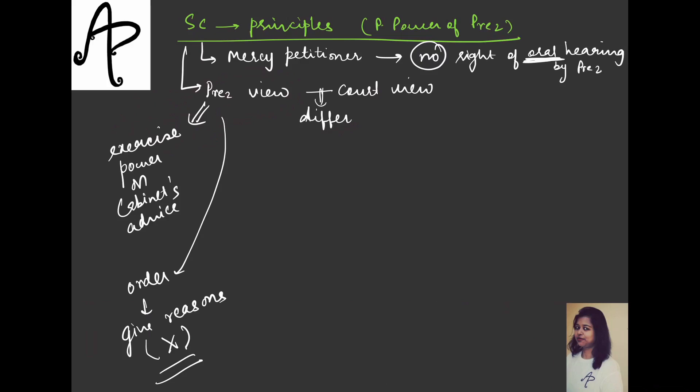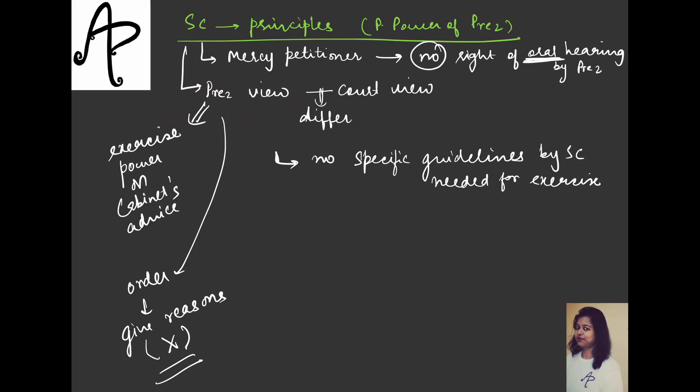Also note: if the President feels that a judgment is being unduly harsh on the person, it can be reduced. Or if the President feels something was wrongly decided, they can give another chance — Dr. Ambedkar talked about this, saying the aim is to allow for correction of mistakes. Also, the Supreme Court said that no specific guidelines by the Supreme Court are needed for the exercise of power by the President — the President does not need guidelines from the Supreme Court to exercise their pardoning power.